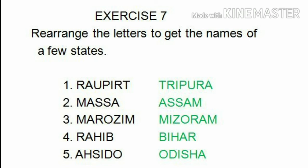Number 2: M-A-S-S-A-S. Arrange the letters and we will get Assam: A-S-S-A-M. Number 3: M-A-R-O-Z-I-M. Arrange the letters and we will get Mizoram: M-I-Z-O-R-A-M.